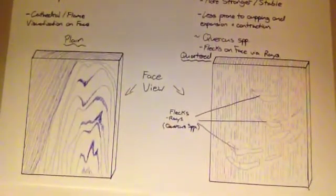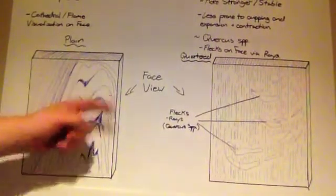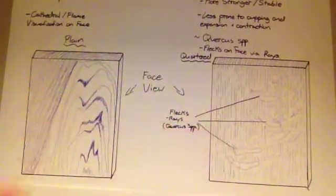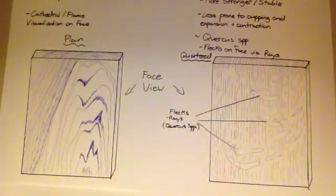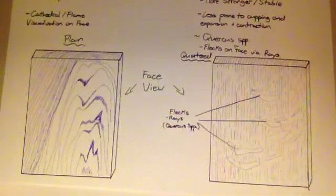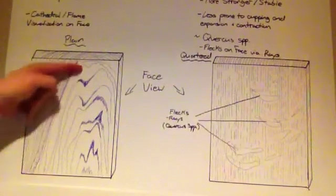So what I've done here is showed the visual aspect of each process shown from the face of the board. A visual ID feature used to identify plain sawn boards is present on the face of the board with a distinct cathedral and flame look within the grain.